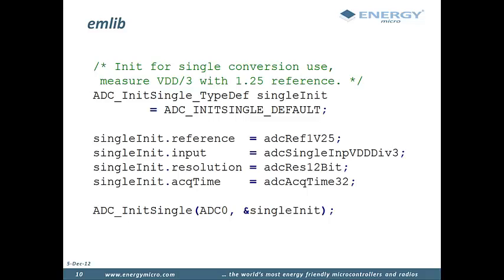The first line on this slide declares an init struct and fills it with a default value. Default values are useful when you do not care about all the values in a struct; they are given sensible defaults without the programmer having to specify all of them. The next lines fill in the struct with appropriate values for the application. Note that the values here are enums. The use of enums makes it easy to see what the allowed values are for each field. Not all fields will have enum values; some will also use integers or boolean values. Finally, the call to ADC_Init will set up the registers.